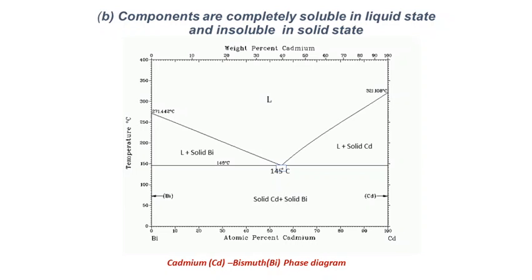The single-phase region exists only in the molten or liquid state. The phases in this phase diagram are: one single-phase liquid region separated from other regions by the liquidus line; two two-phase regions — liquid plus solid bismuth, and liquid plus solid cadmium; and below the eutectic point, one two-phase solid region consisting of solid cadmium plus solid bismuth. So in total: one single-phase liquid region, two liquid-plus-solid two-phase regions, and one solid-plus-solid two-phase region.